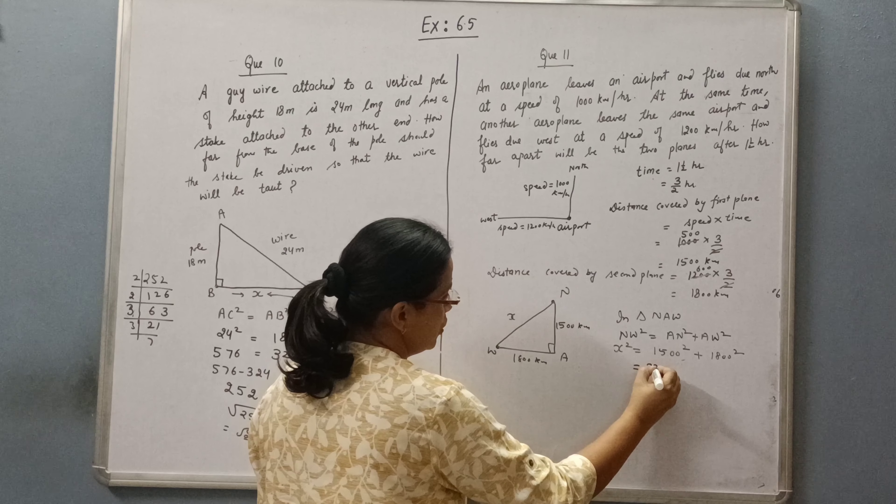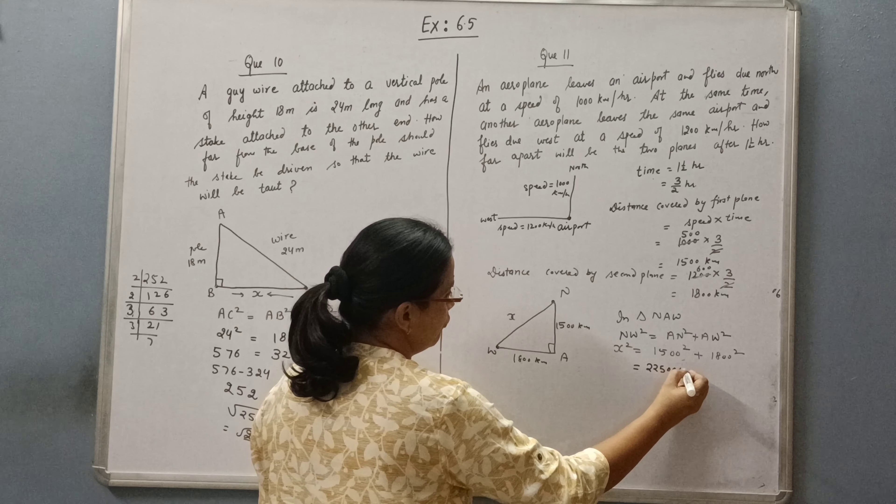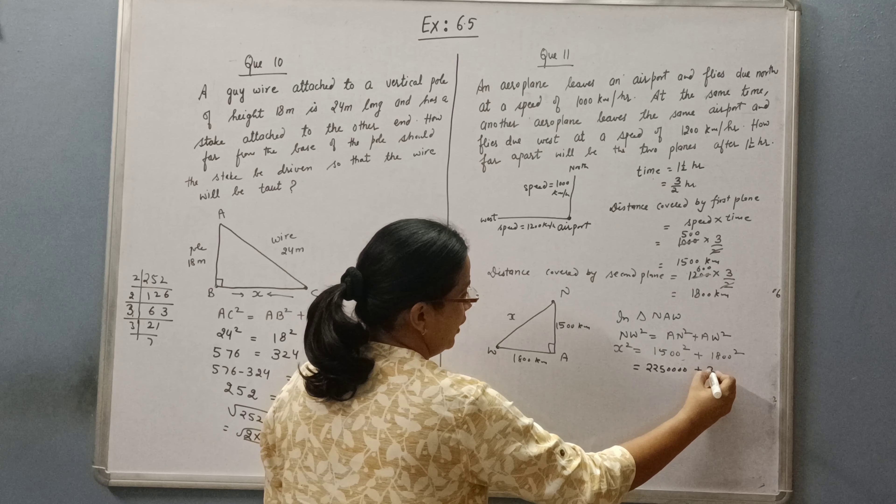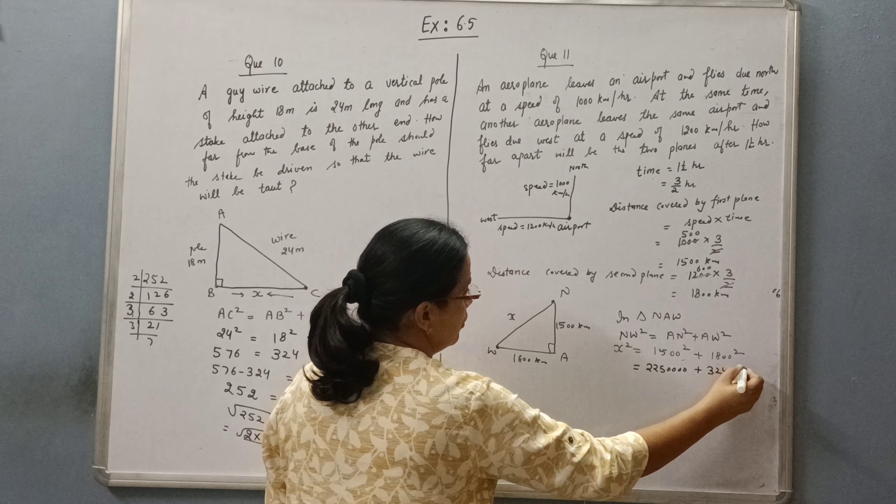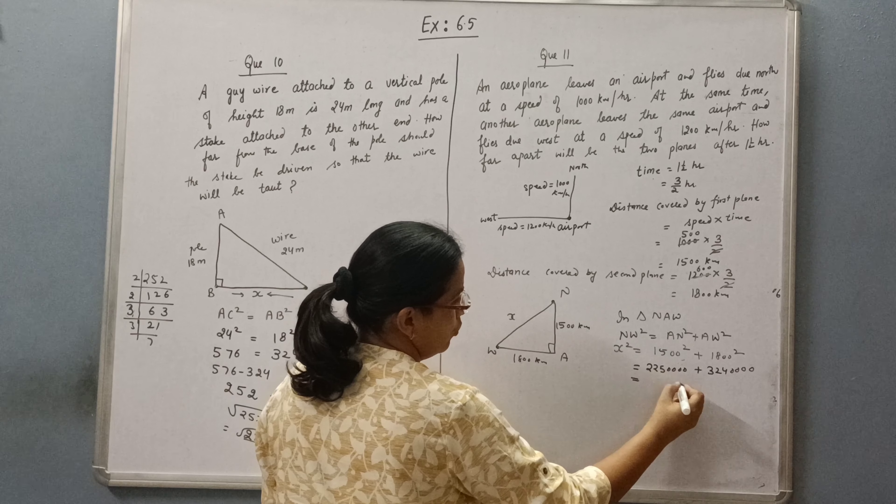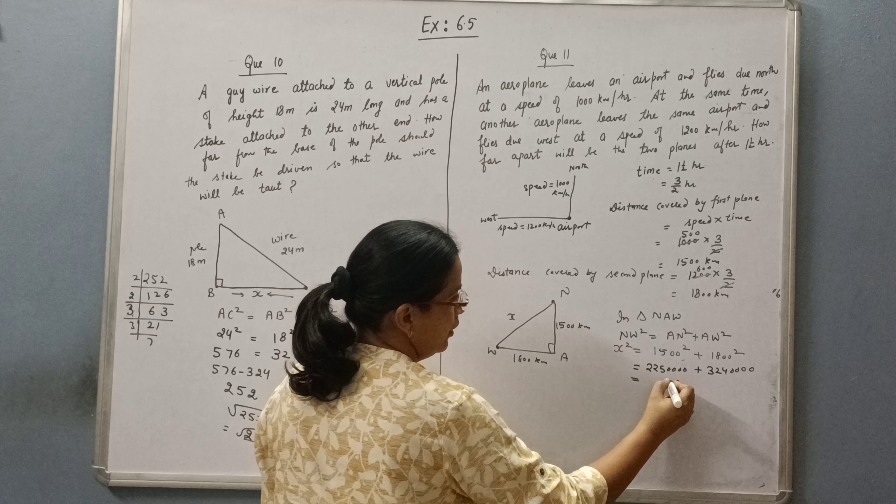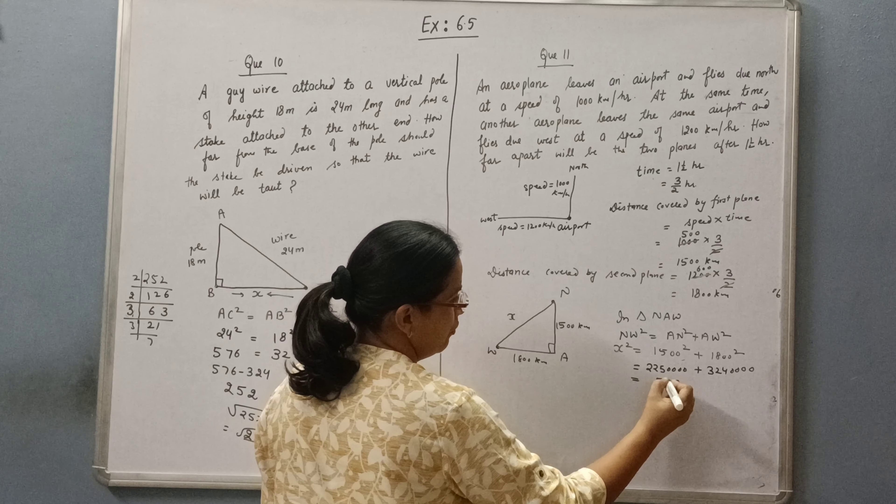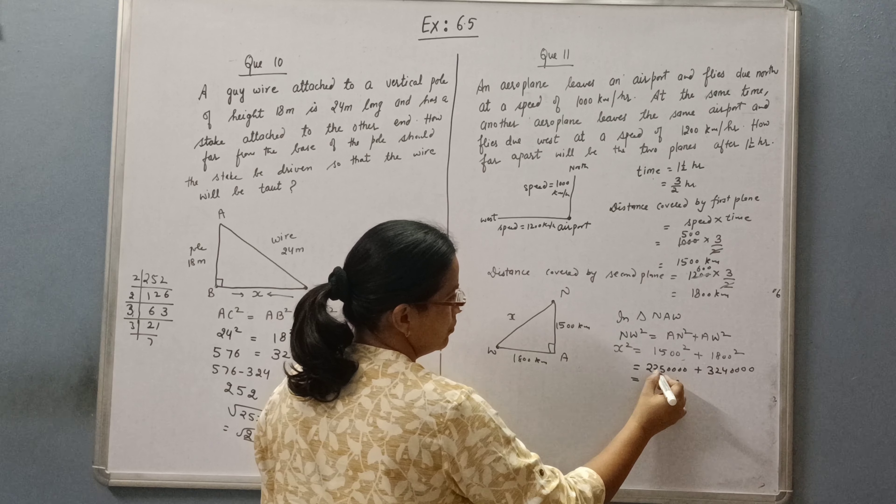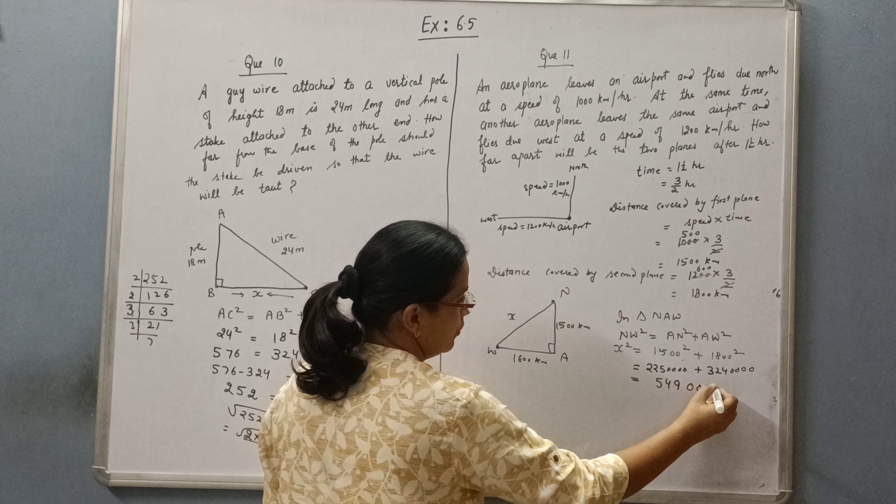Square of 1500 is 2250000. Square of 1800 is 3240000.